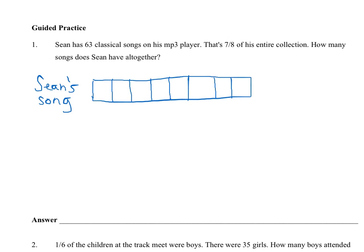Now I go back and say, okay, I know seven-eighths of this. One, two, three, four, five, six, seven — seven-eighths of his collection is classical songs. So I'll put a C for classical. I also know in the word problem that Sean has 63 classical songs. So from here to here must be 63. Seven of the eight equal parts is equal to 63.